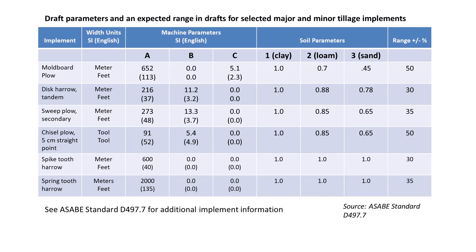Typical draft requirement parameters for some implements are summarized in a table. Each parameter is a function of the tillage tool design. The constant parameter A is a function of soil strength, while the coefficients of speed parameters B or C are related to soil bulk density. Soil is categorized as fine, medium, or coarse: fine textured soil is high in clay content, medium textured is loamy, and coarse textured is sandy.